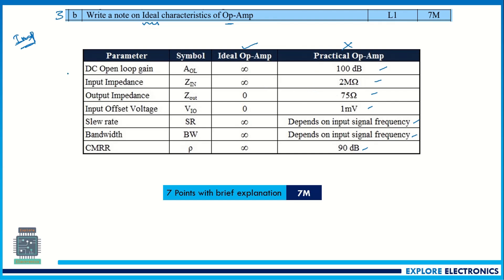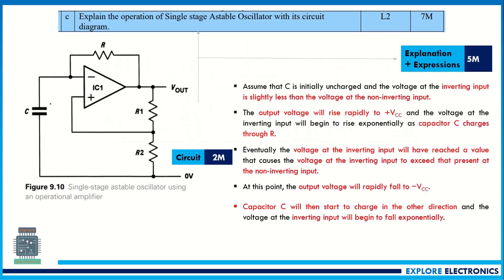The ideal op-amp characteristics are: open-loop gain is infinite, input impedance is infinite, output impedance is zero, offset voltage is zero, slew rate is infinite, bandwidth is infinite, and common mode rejection ratio (CMRR) is infinite. Remember all these points. Also remember the practical values, because if asked in the exam you need to write those too. There are seven to eight points, each carrying one mark.